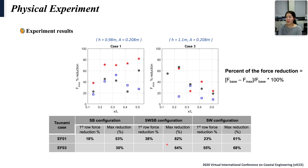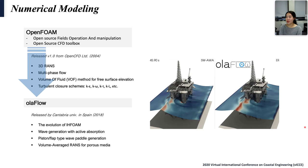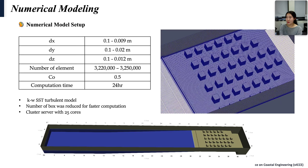We also tried to validate the numerical model using the experimental results. OLAFLOW was used in our research, which is developed from OpenFOAM. OLAFLOW has a piston and flap-type wave paddle generation and a set of boundary conditions for generating and absorbing waves at the boundary to reduce computational expense. The numerical model setup in this work is in this table. The mesh size is reduced from 10 cm at offshore to almost 1 cm around the structures. The Courant number was set to 0.5 and K-Omega-SST turbulent model was used in this case.